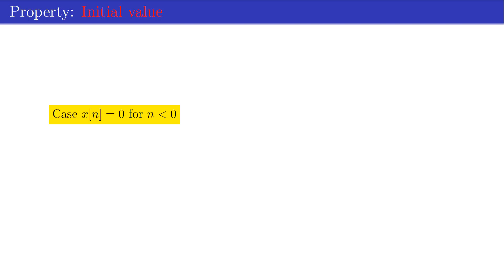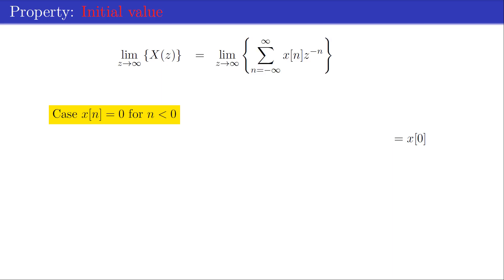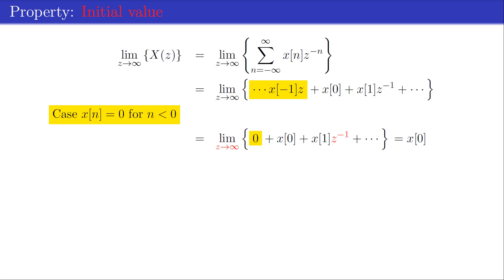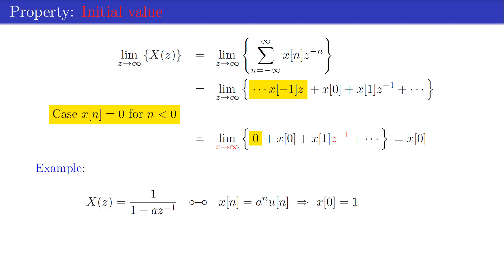If the sequence x[n] equals 0 for n < 0, the initial value x[0] may be found from X(z) by taking the limit as z → ∞. This initial value property is demonstrated with a z-transform X(z) related to an exponentially decaying function x[n], for which x[0] = 1, confirmed by the initial value theorem.